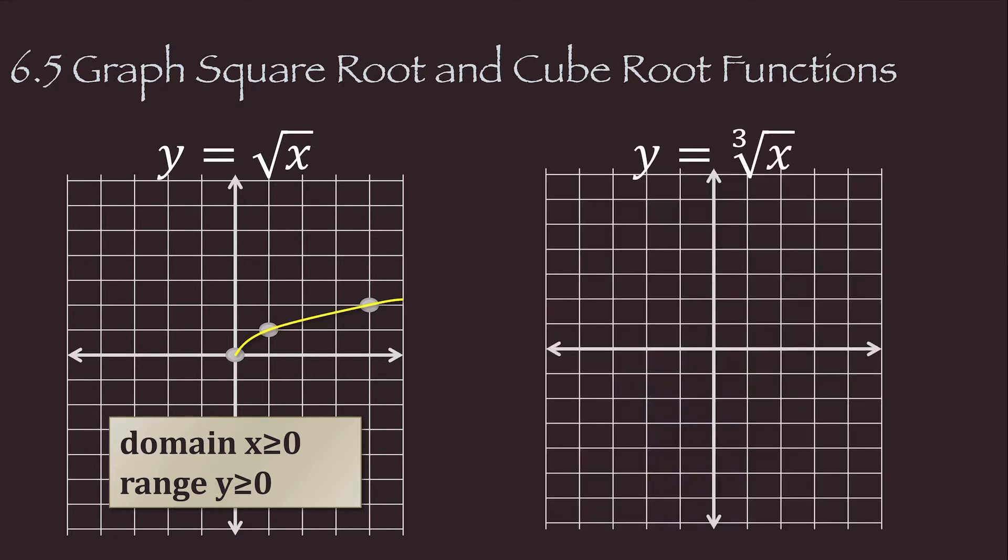For the cube root, we can use negative numbers. When x is negative 8, y is negative 2. When x is negative 1, y is negative 1. If x is 0, y is 0. If x is 1, y is 1. And if x is 8, y is 2.